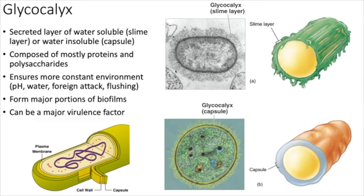Syphilis and related diseases — yaws, bejel, and pinta — are all different subspecies of Treponema pallidum. They cause similar disease to syphilis but not necessarily as an STI; infection can occur by stepping on something or through skin contact. Syphilis can progress to get into your bones and cause severe damage; historically, untreated cases led to severe disfigurement.